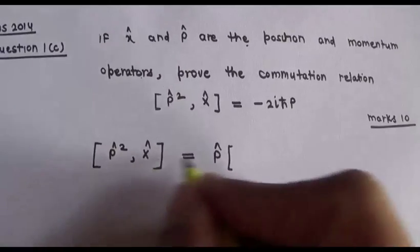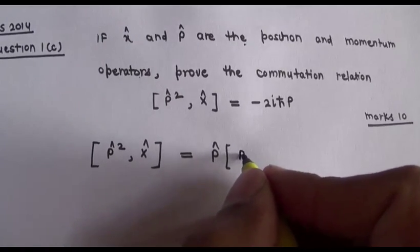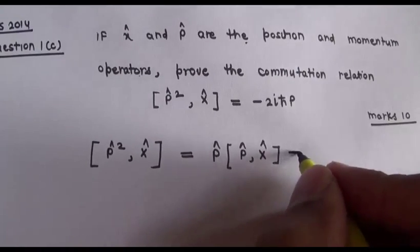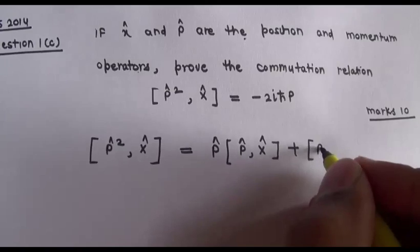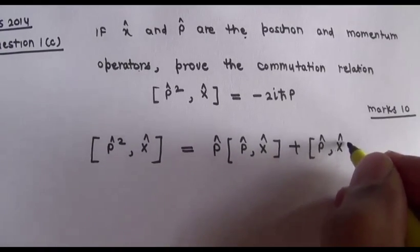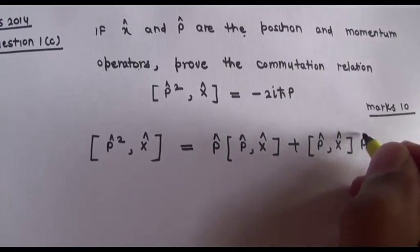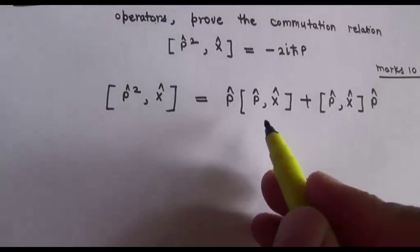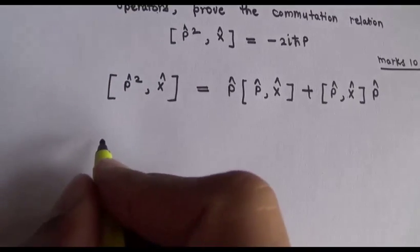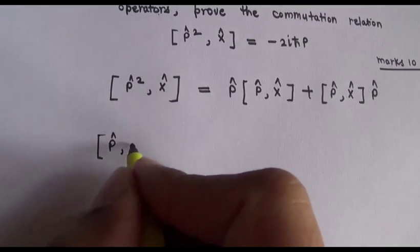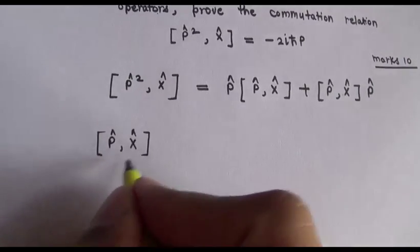We can expand the commutator [p̂², x̂] into [p̂, x̂]·p̂ plus p̂·[p̂, x̂]. Now we have to find the value of the commutation relation between p̂ and x̂.